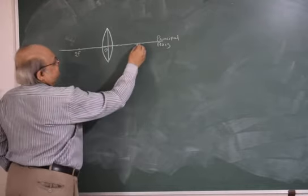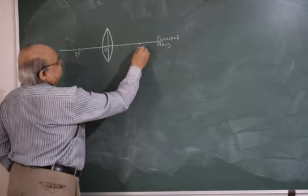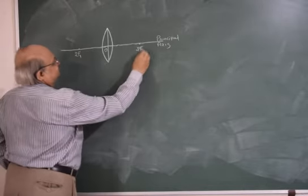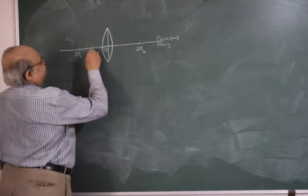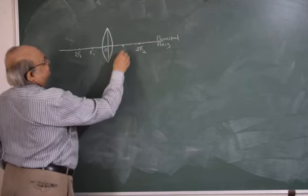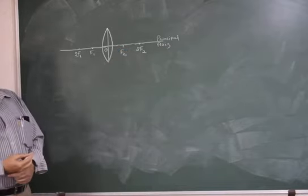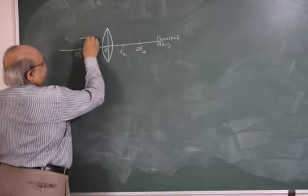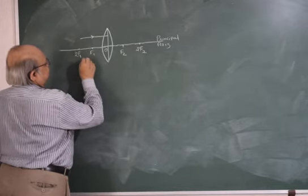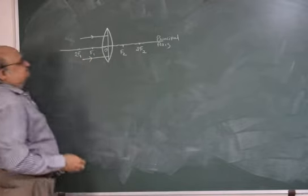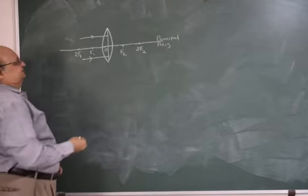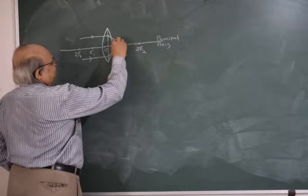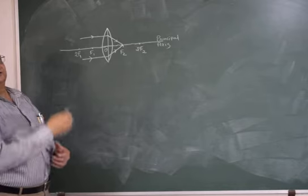What about the other surface? The 2F will be somewhere here. Since we cannot use 2F on both sides, we call them 2F1 and 2F2, and somewhere in the middle will be F1 and F2. Now we bring rays parallel to the principal axis to focus onto the convex lens, and they converge and meet at the principal focus on the other side of the lens.